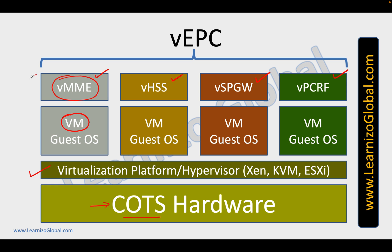These are called VNFs — virtualized network functions. So instead of having purpose-built hardware for a specific network function, we have generic hardware and we can separate the hardware from the software. You can get the hardware from one vendor and the application from another vendor, so you are not dependent on the same OEM for buying all the hardware and software.